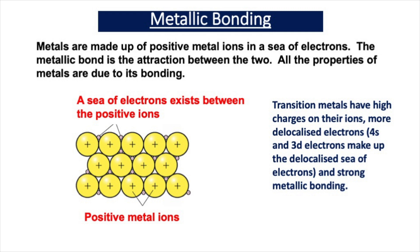For example, metals conduct electricity because they have a delocalized sea of electrons. Metals have high melting points because there's strong attraction between the positively charged ions and the delocalized sea of electrons. Metals are malleable because the ions are able to slide over each other. For the same reason, metals are ductile. It's important that you're able to link the bonding in metals with the physical properties they exhibit.